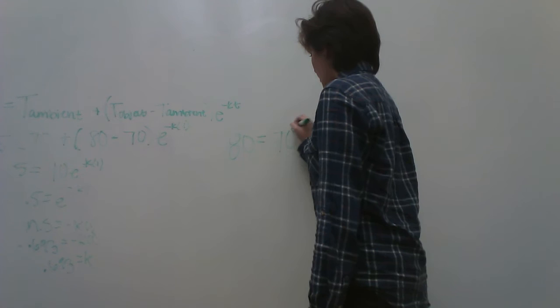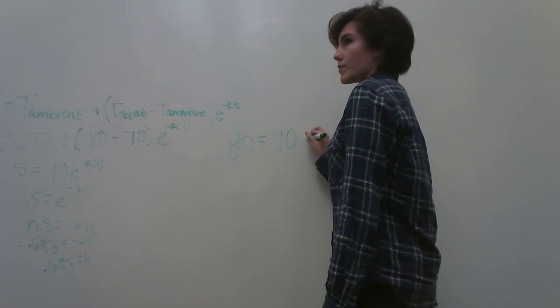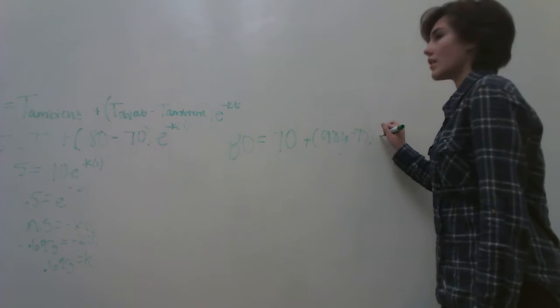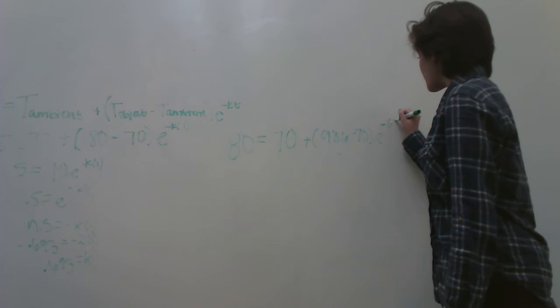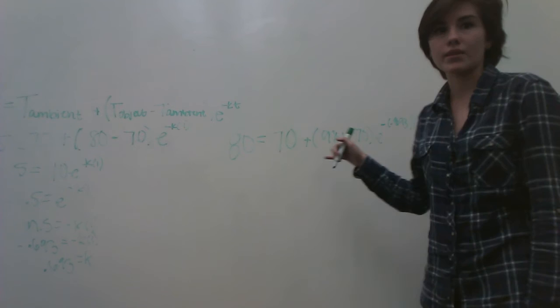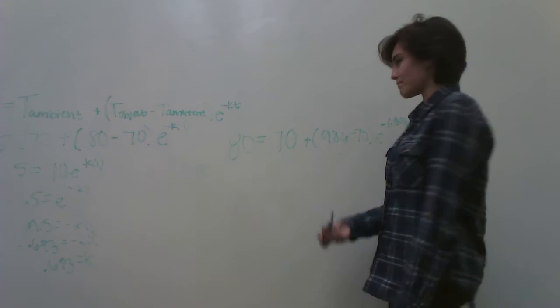And then you're going to put the initial, I mean that's the temperature, the 70, plus the 98.6 minus 70. So you're going to see E raised to the negative 0.693 times T, because we're looking for the time now at which the body was initially.